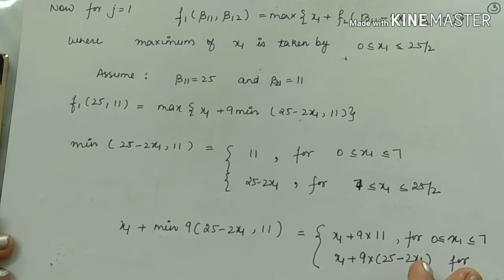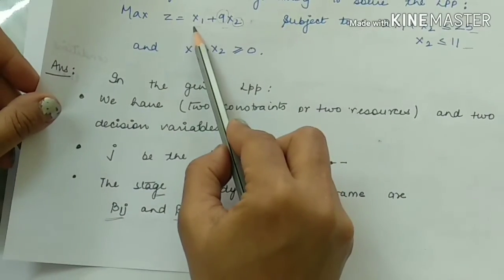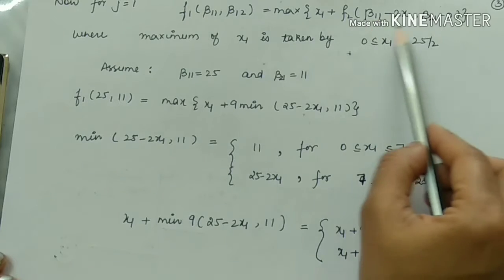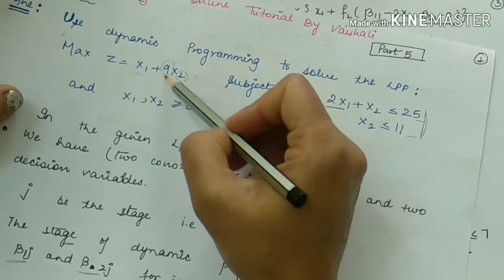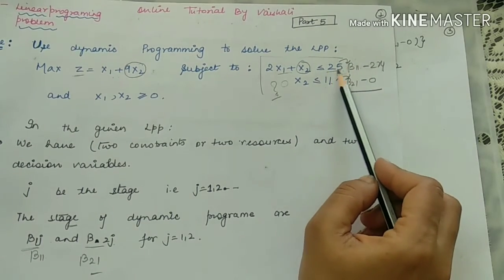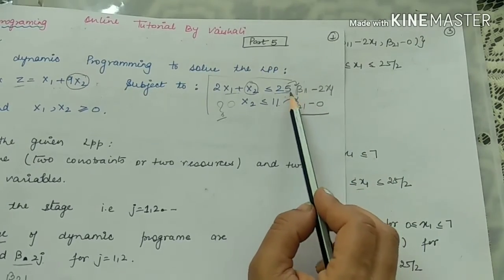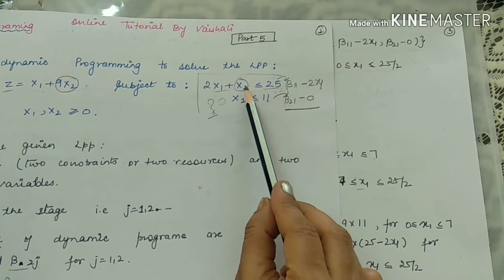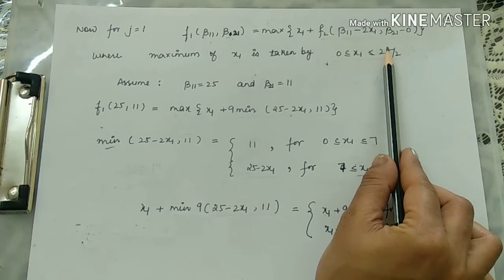Now we work for stage 1, where J = 1. We write the functional equation F1(β11, β21). The right-hand side includes the full objective function: x1 plus the functional value of 9x2, which is replaced by F2. We assume β11 = 25 and β21 = 11. Taking x1 to the right-hand side in each constraint gives x2 = β11 − 2x1 and x2 = β21.